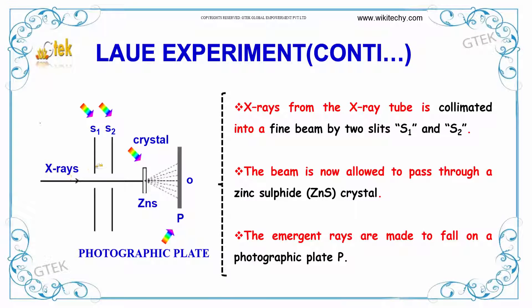X-rays from the X-ray tube are collimated into a fine beam by two slits, S1 and S2. The beam is then allowed to pass through a zinc sulphide crystal. The emergent rays are made to fall on a photographic plate, P.